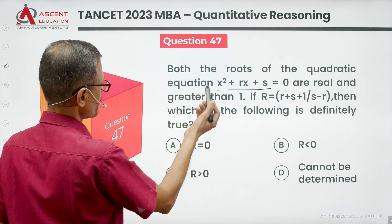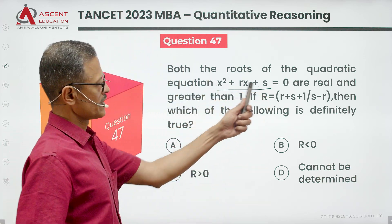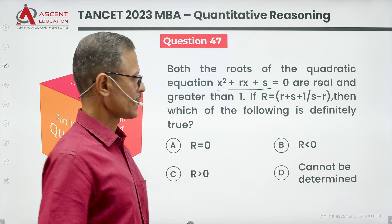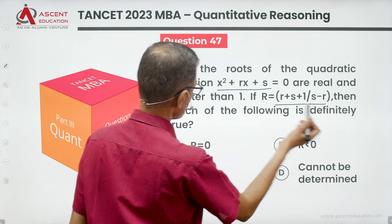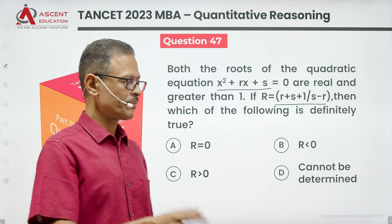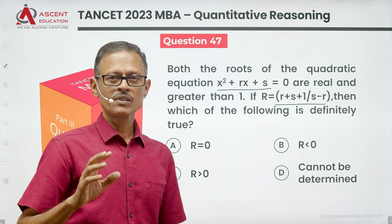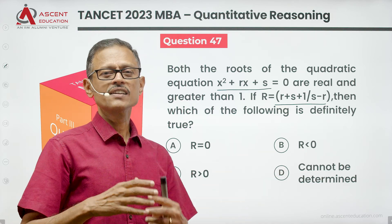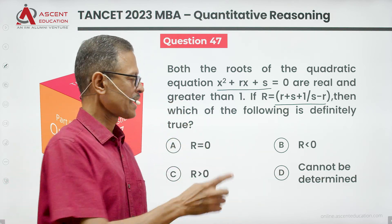Both roots of the quadratic equation x² + rx + s = 0 are real and greater than 1. Given that r equals a certain expression, which of the following is definitely true? The answer options are: r = 0, r < 0, r > 0, or r can be 0, positive, or negative.